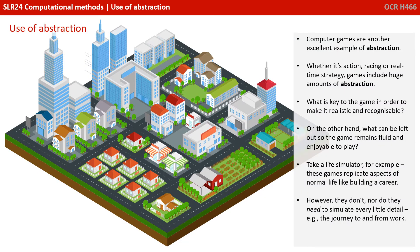Computer games are another excellent example of abstraction. Whether it's action, racing or real-time strategy, games include huge amounts of abstraction. What is key to the game in order to make it realistic and recognisable? On the other hand, what can be left out so the game remains fluid and enjoyable to play?